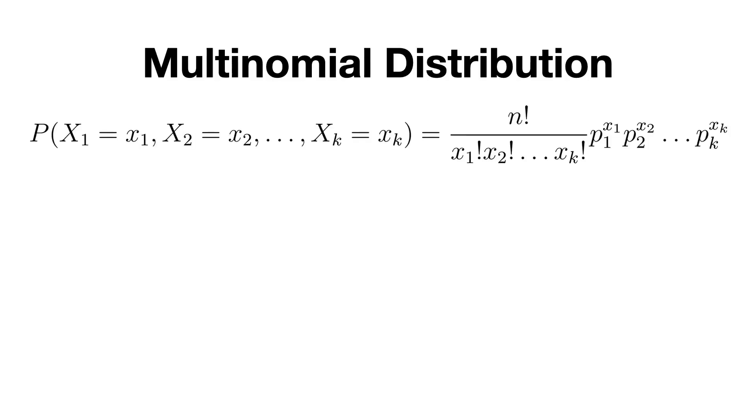And the probability formula for the multinomial distribution is the following. Don't be scared because it's quite long; it's quite simple if you understood the distributions I've explained so far.